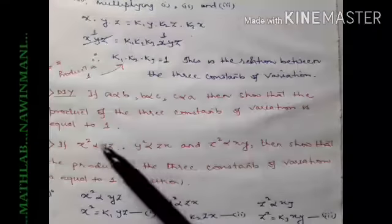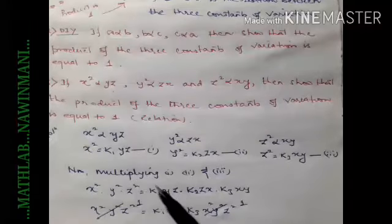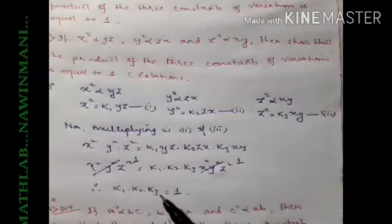I have given a similar question with variables a, b, c as a DIY exercise. There is also one more question — same type but with a slightly different condition. You convert the variations into equations similarly, get three equations, multiply left-left-left and right-right-right, and x²y²z² cancels on both sides, again giving k1·k2·k3 = 1. The product of the three constants of variation equals one.